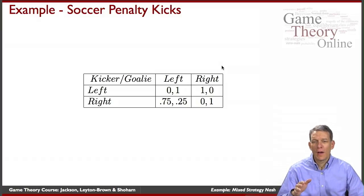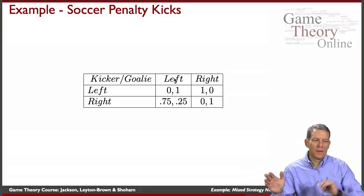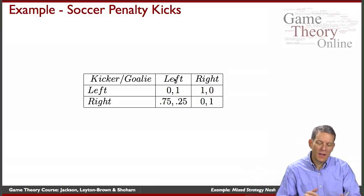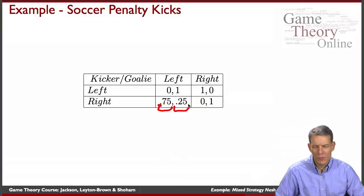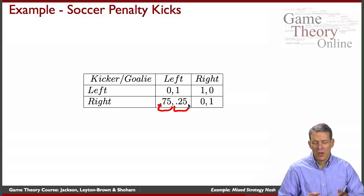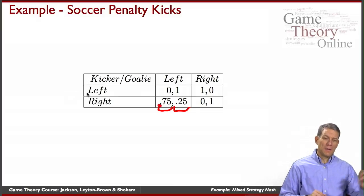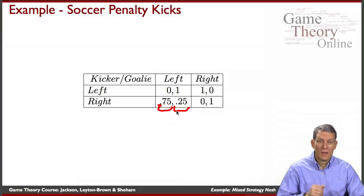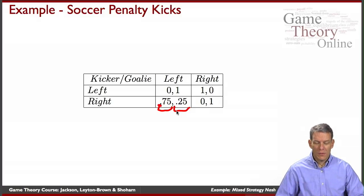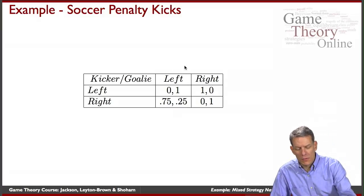Now let's change things. We've got a kicker who sometimes misses when they go to the right. In particular, if the goalie happens to go to the left and the goal is wide open to the right, the kicker scores 75% of the time but actually misses completely 25% of the time. So this kicker still does well going left with the goal open, but now has a lower probability of winning when kicking right even with a wide-open goal. How should the equilibrium adjust?